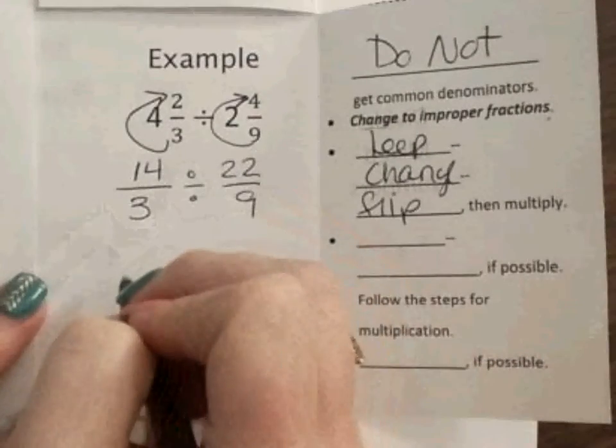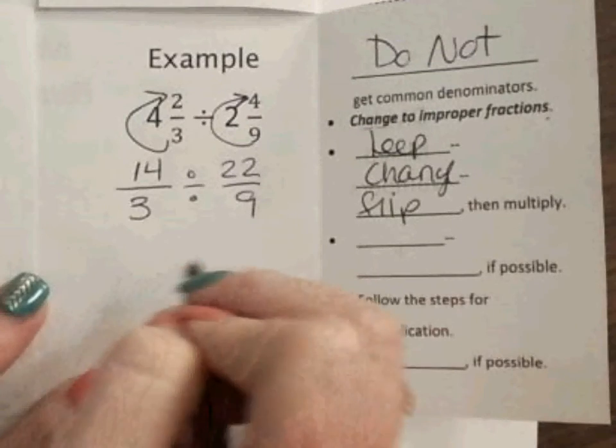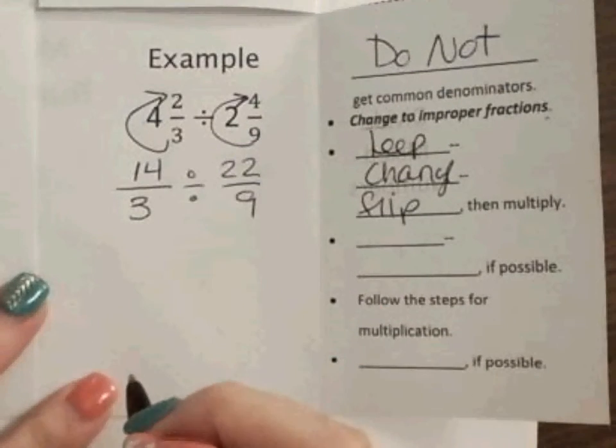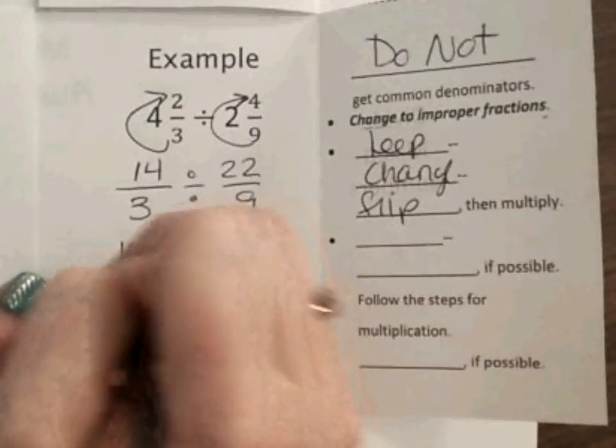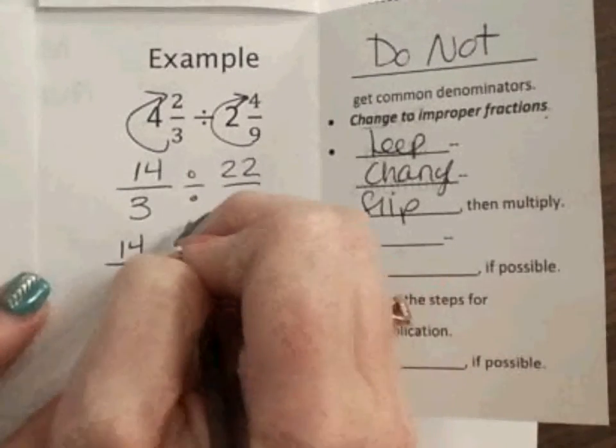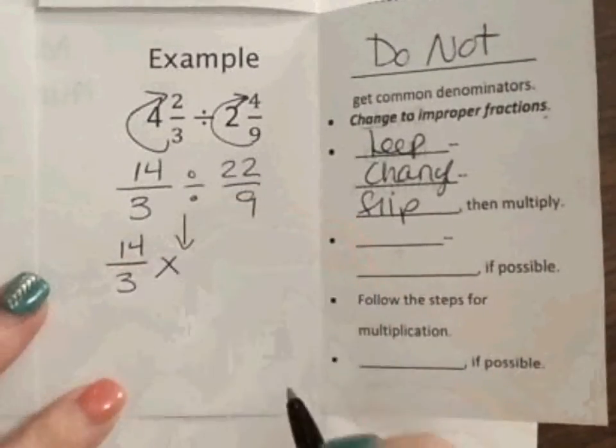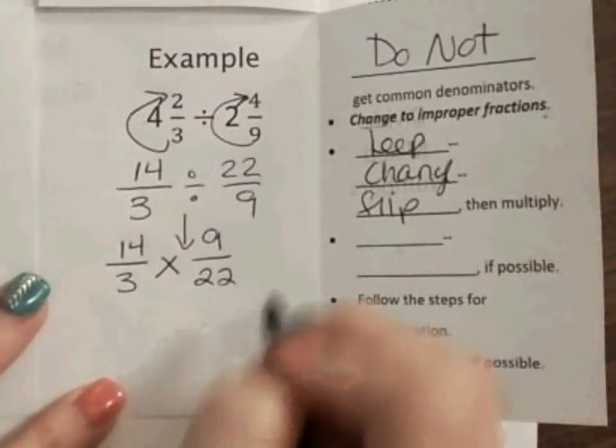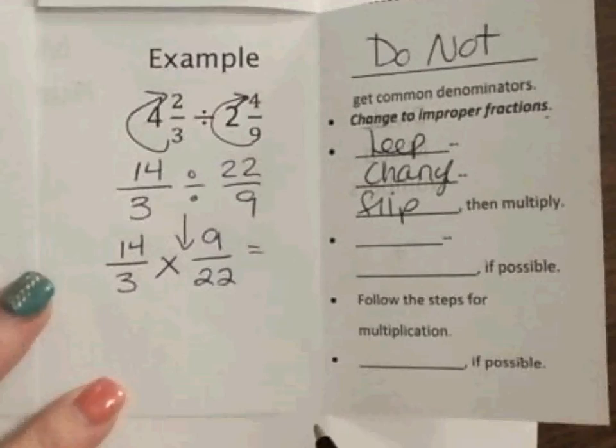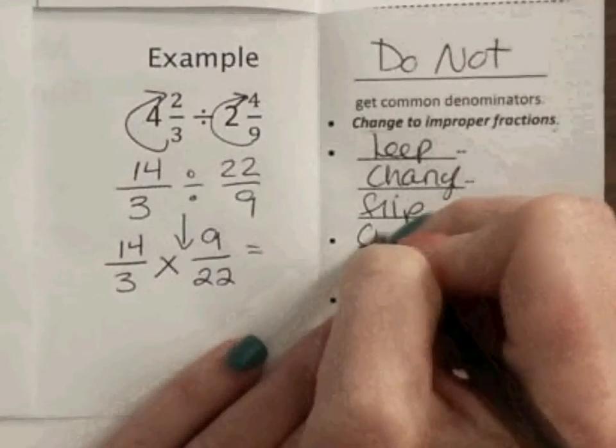So, I'm going to rewrite it. Again, like Ms. Hull said, I'm going to rewrite the entire process, because if I don't, I am more than likely going to make a mistake. So, I keep my first fraction, 14 thirds, change that division to a multiplication, and I'm going to flip my second fraction around on top of itself. So, now, I'm going to cross reduce again.